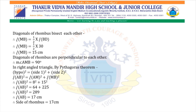Diagonals of a rhombus are perpendicular to each other, so angle AMB = 90 degrees. In right-angle triangle AMB, by Pythagoras theorem: AB² = AM² + MB² = 8² + 15² = 64 + 225 = 289. Therefore, AB = 17 cm. So the side of the rhombus is 17 cm.